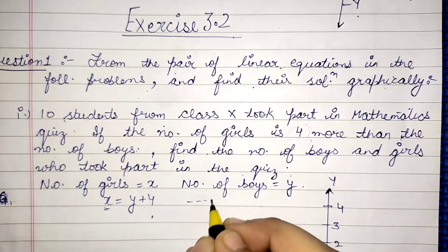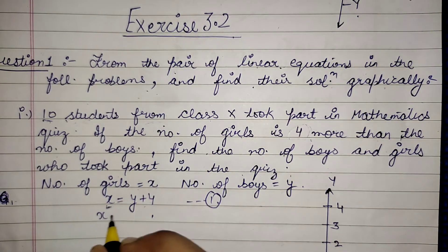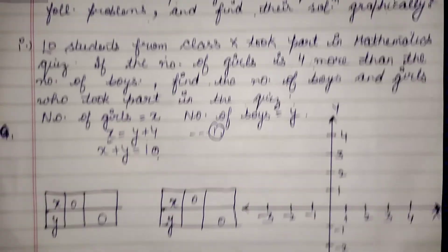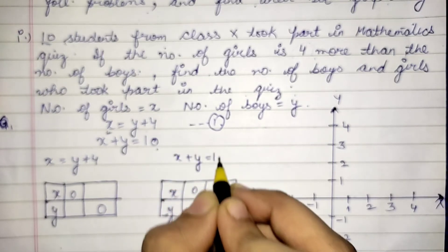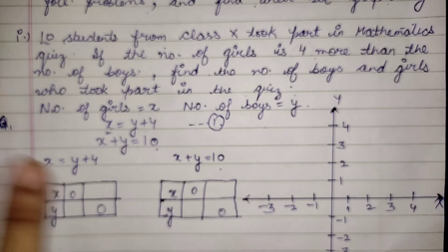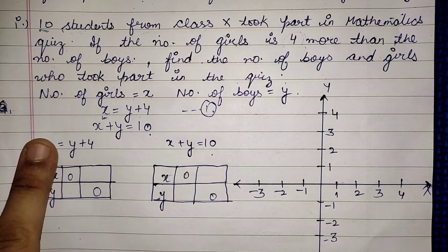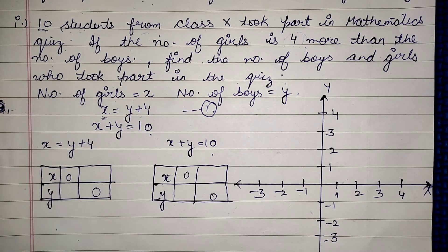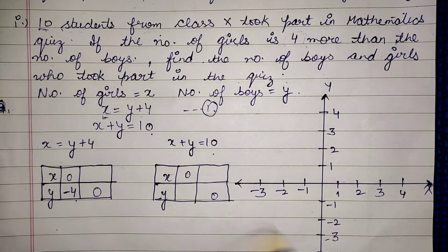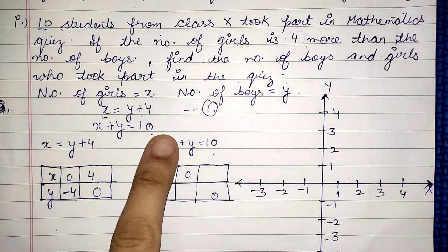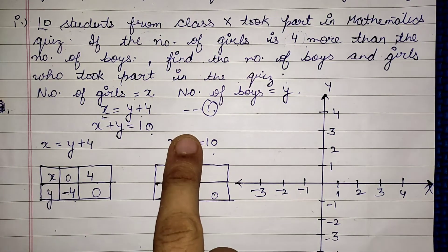The first linear equation is: x = y + 4. The second equation: total students is 10, so x + y = 10. To find the points for the first equation: if x = 0, then y = −4; if y = 0, then x = 4.